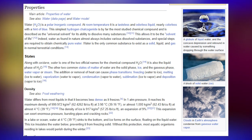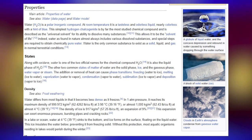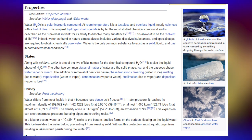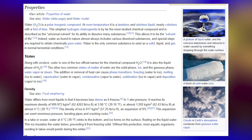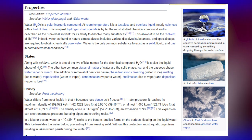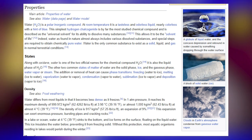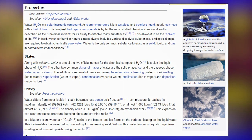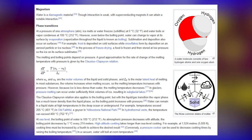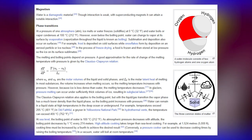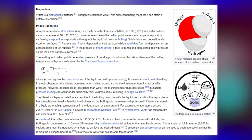In a lake or ocean, water at 4°C sinks to the bottom and ice forms on the surface, floating on the liquid water. This ice insulates the water below, preventing it from freezing solid. Without this protection, most aquatic organisms residing in lakes would perish during winter. Water is also a diamagnetic material, though the interaction is weak; with superconducting magnets it can attain a notable interaction.